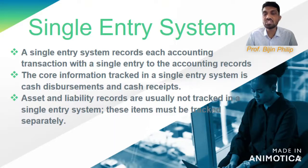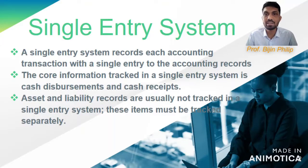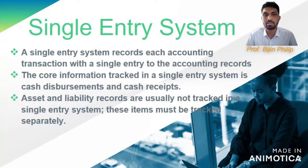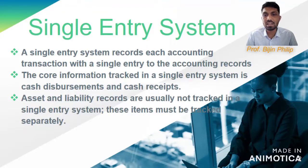The core information tracked in a single entry system is cash payments and cash receipts — any payment made by the company to outsiders as well as payments received from outsiders. This system is mainly used by small business firms. Asset and liability records are usually not tracked in a single entry system, so a separate system is needed to track assets and liabilities in an organization.